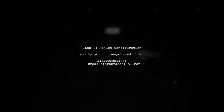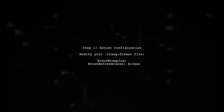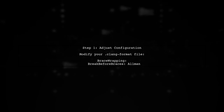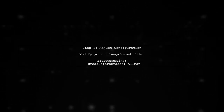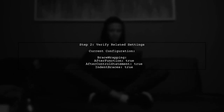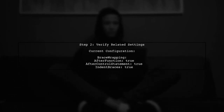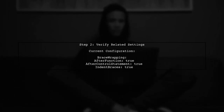Now, let's get started. To configure Clang Format to place the opening brace of a Lambda function on a new line, we need to adjust the brace wrapping settings in our configuration file. In your current configuration, you have set break before braces to Allman. This is the correct setting for placing braces on new lines.